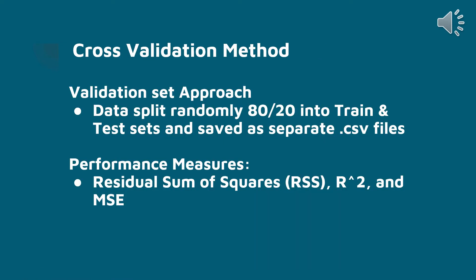To evaluate our models through cross-validation, we use the validation set approach by splitting our data into two sets — one with about 80% of the data and one with 20% — as our train and test datasets. Those are both saved as two separate CSV files for analysis in R.